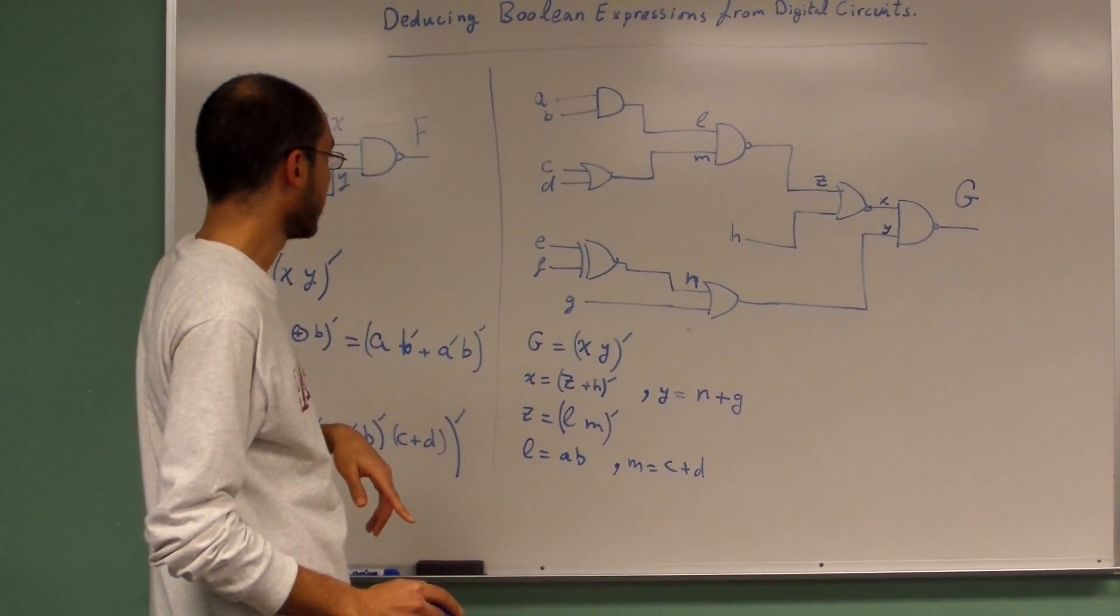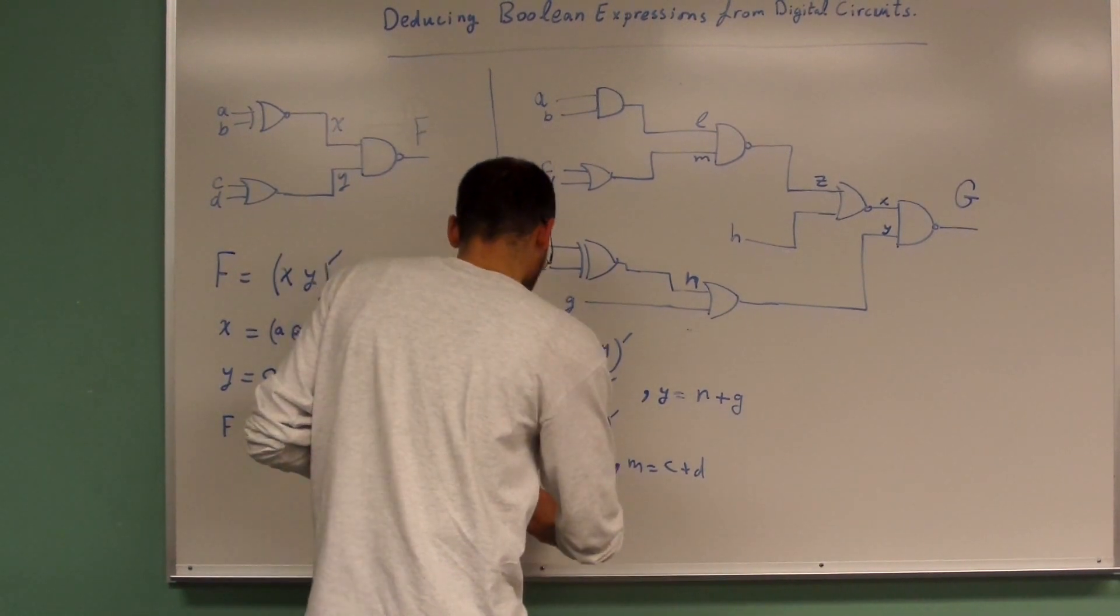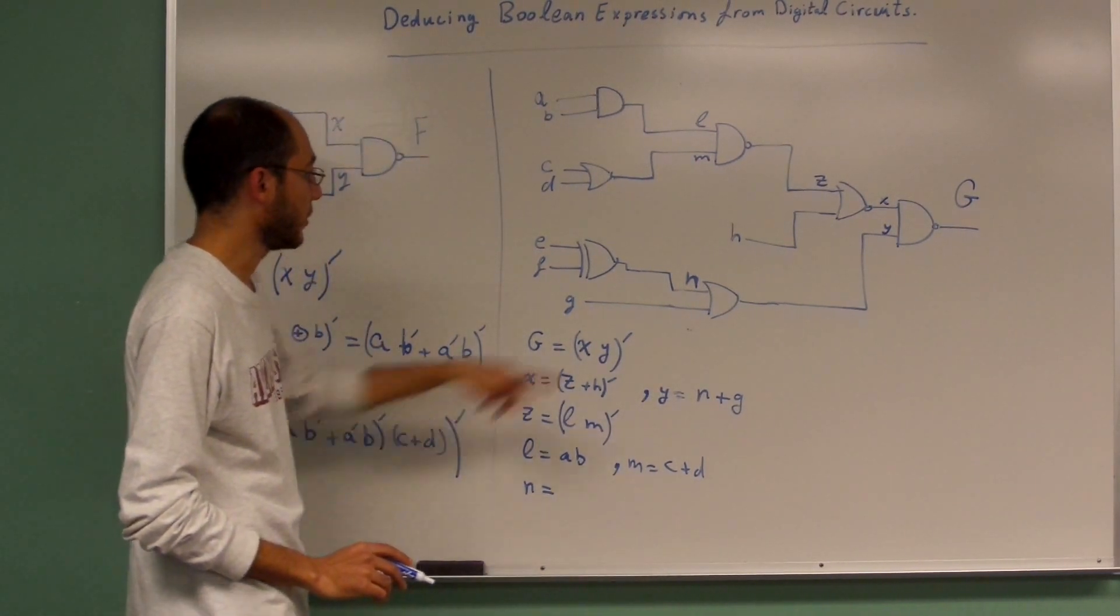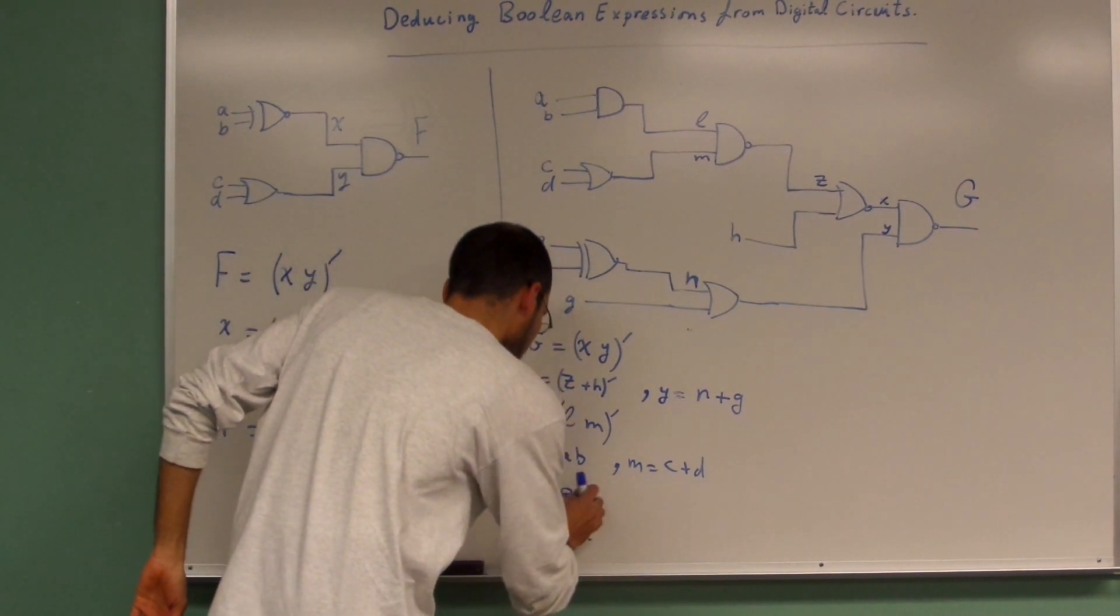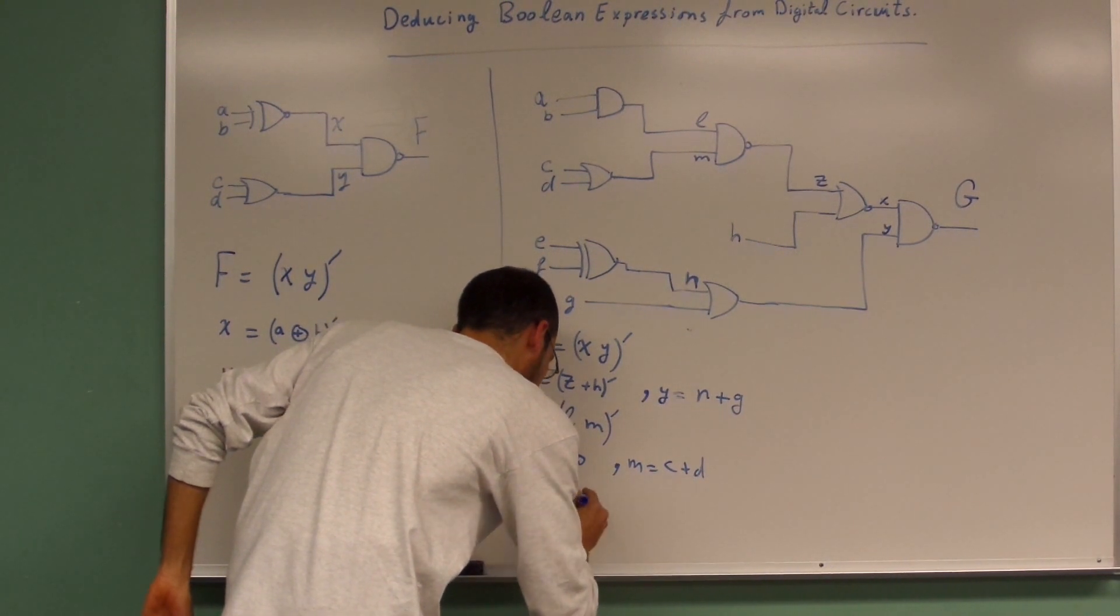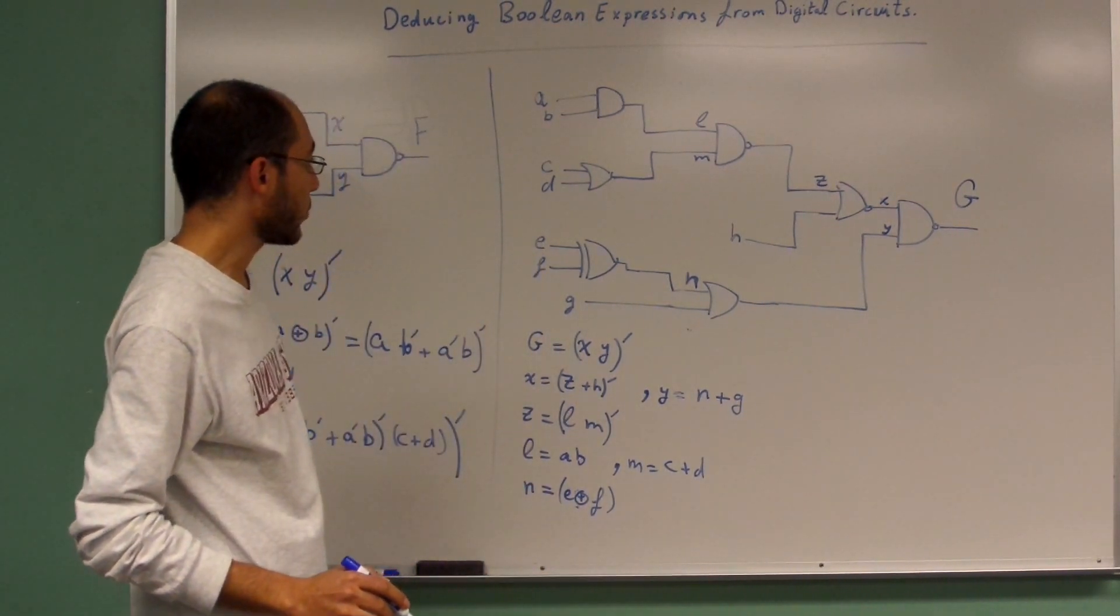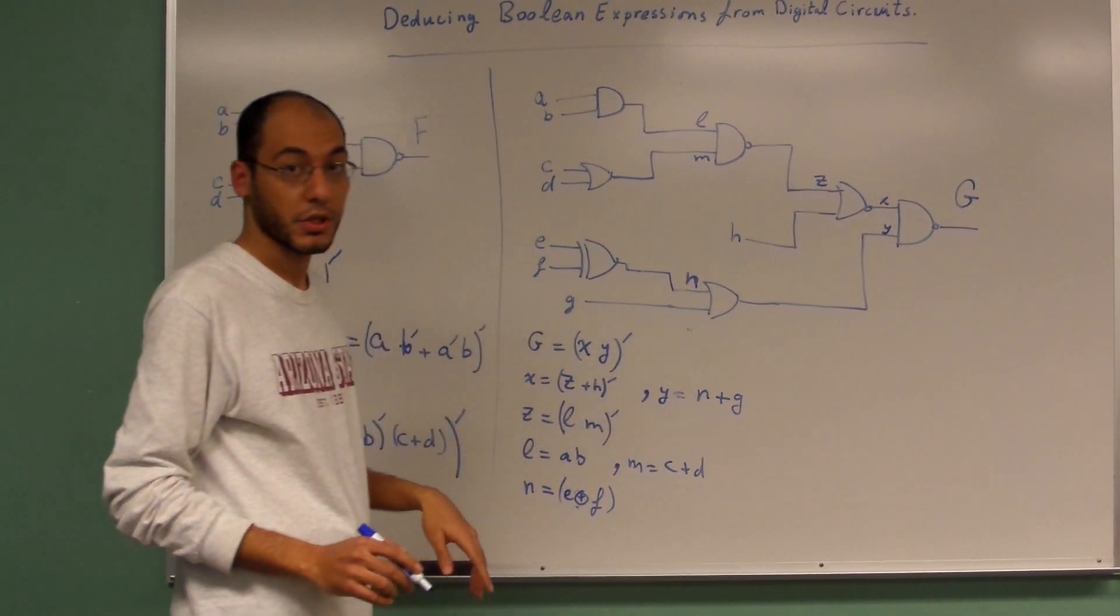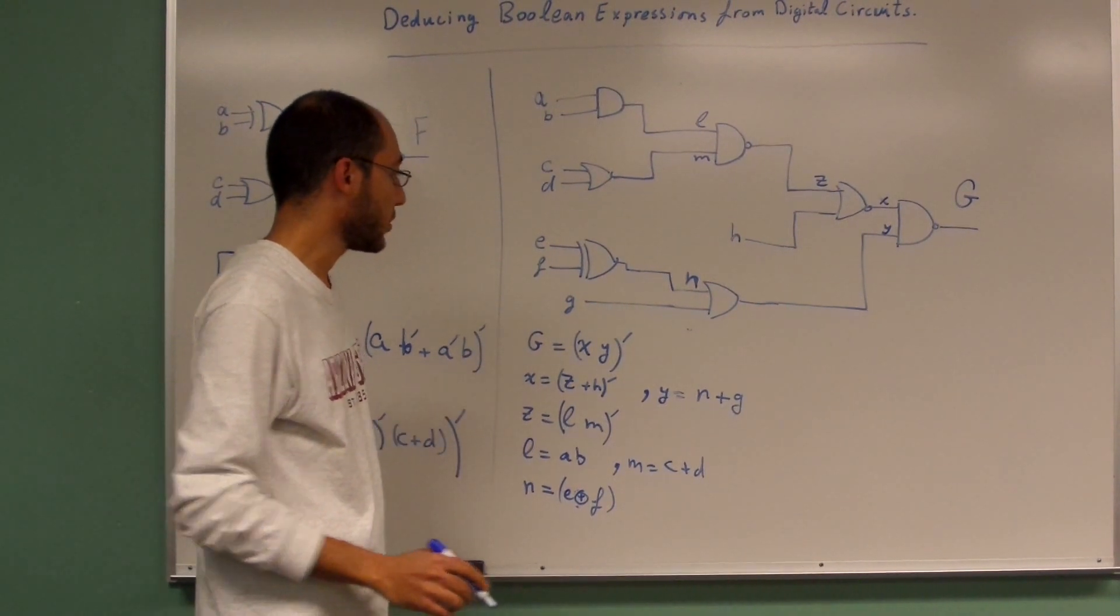And then you have N. What is the value of N? This is N which is the XOR between E and F. So what I'm going to do right now is substitute all of these equations into G, but first I'm going to do it backwards from down to top.